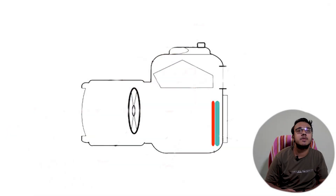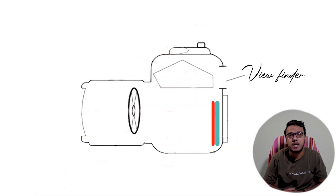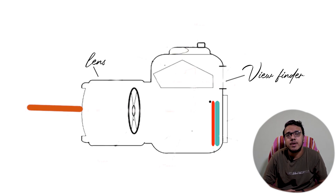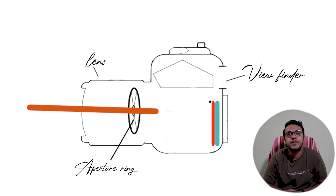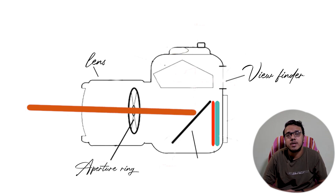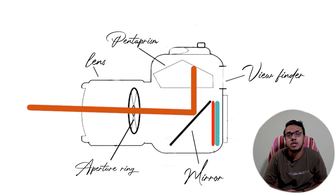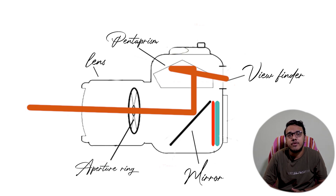This is our first video on how does your camera make a photograph. First of all, we will know how our viewfinder works. Light enters through the lens, hits the aperture ring, then hits the mirror. From the mirror, light travels up to the viewfinder, which is how we frame the subject.